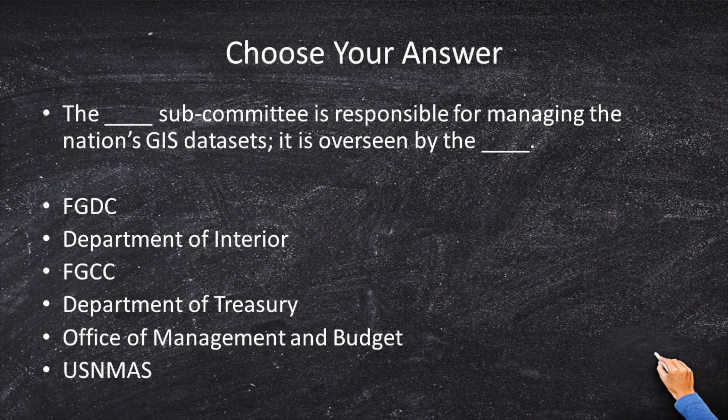The choose-your-answer states: the blank subcommittee is responsible for managing the nation's GIS data sets; it is overseen by blank. Again, this is a fill-in-the-blank with two blanks. If you get one of the two wrong, you will get zero points for this question. This is made all the more complicated because you have six different answer choices and you have to grab the correct one and drag it up to the box — that's what makes this problem so difficult.